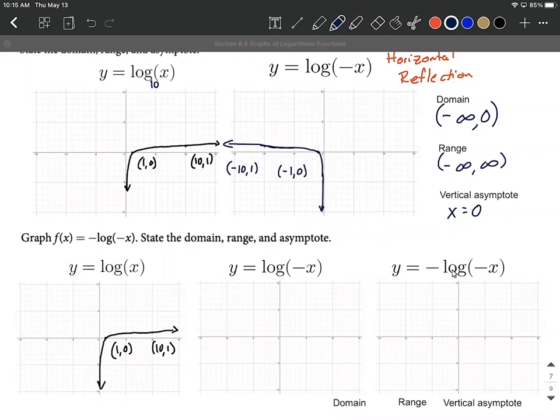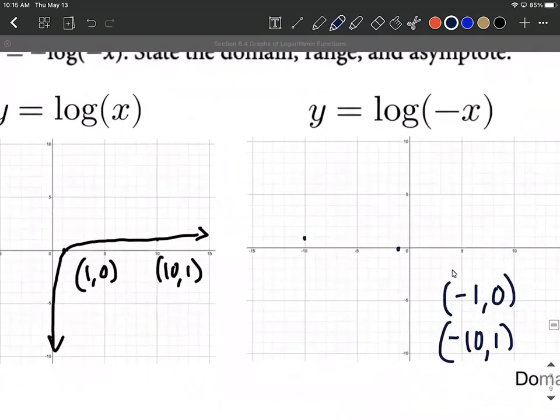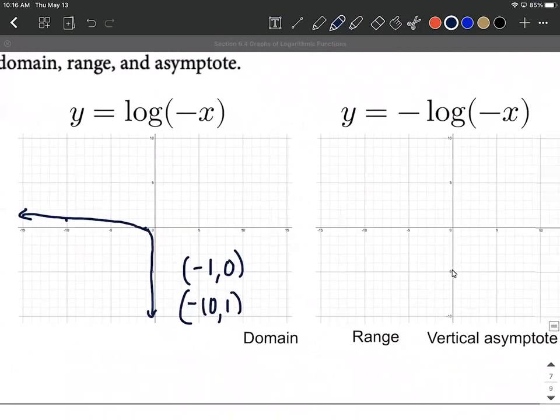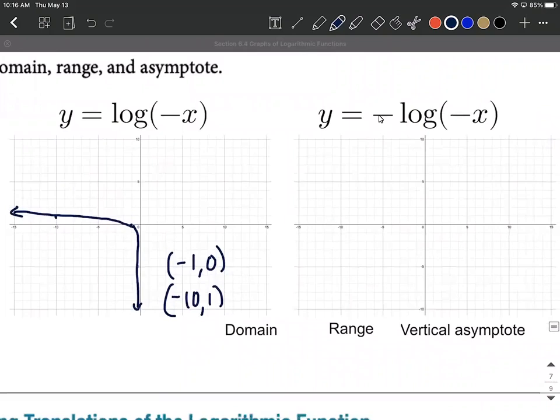So since we've already done the work to find some key points on this, we said (-1, 0) and (-10, 1) as being our key points and sketch that in. I'm using the work that we just did up above to get this graph. Same exact logic, but then let's use that to apply this other transformation.